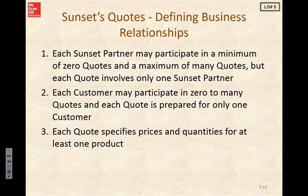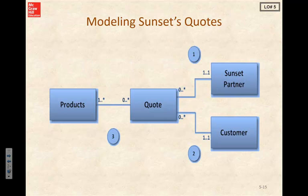Here's what we know about our Customer Sunset. Each Sunset partner may participate in a minimum of zero quotes and a maximum of many quotes, but each quote involves only one Sunset partner. Each customer may participate in zero to many quotes and each quote is prepared for only one customer. Each quote specifies prices and quantities for at least one product. This is what our UML class diagram would look like in our REA format, with our Resources being Products, our Events being the Quote, and our Agents being the Sunset Partner and the Customer.